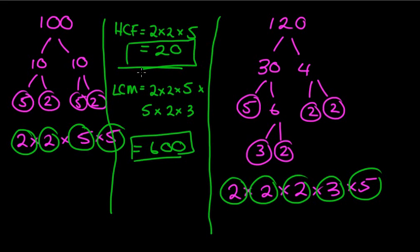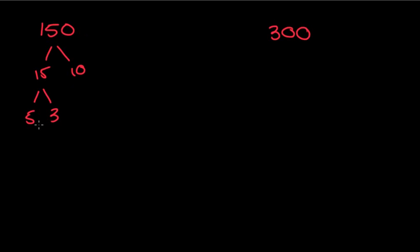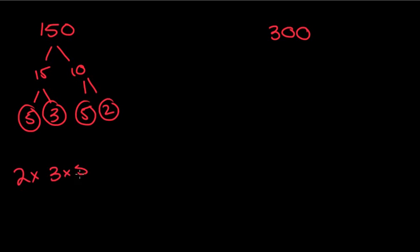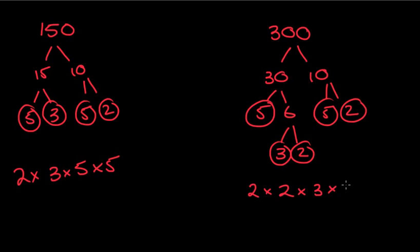Let's go through one last example. We're going to use the numbers 150 and 300. For 150, I'll use 15 and 10, then 5 and 3 (both prime) and 5 and 2 (both prime). So 150 = 2 × 3 × 5 × 5. For 300, I'll use 30 and 10, then 5 and 6 — 5 is prime, 6 gives 3 and 2, both prime — and 5 and 2. So 300 = 2 × 2 × 3 × 5 × 5.